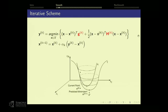One way of generating iterative schemes is through local search. At every point xk, I form some local approximation — here a quadratic approximation — to the function. I find the minimizer of that approximate function and take that as my next iterate. Depending on what you put in the gradient and Hessian terms, you get different methods: full gradient and full Hessian gives Newton; replace Hessian with identity gives gradient descent; remove the quadratic altogether gives Frank-Wolfe. Mini-batch SGD uses a sample average gradient with H as identity.